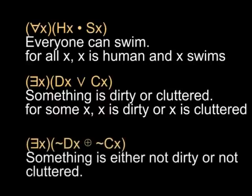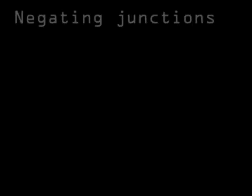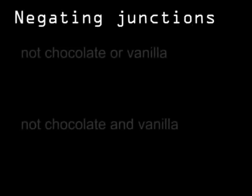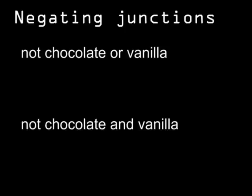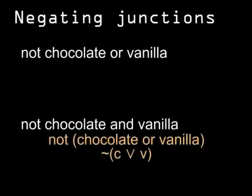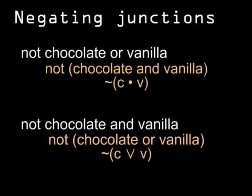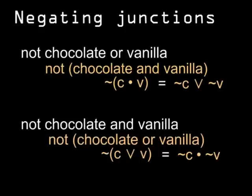For some x, x is not dirty or x is not cluttered, with an exclusive OR. What happens when you negate two symbols joined by AND or OR, like NOT chocolate or vanilla? A set of rules known as De Morgan's Laws will help. If you want to say NOT chocolate and vanilla, you'll represent it as NOT chocolate or vanilla. On the flip side, NOT chocolate or vanilla comes out as NOT chocolate AND NOT vanilla, while NOT chocolate and vanilla is treated like NOT chocolate OR NOT vanilla.